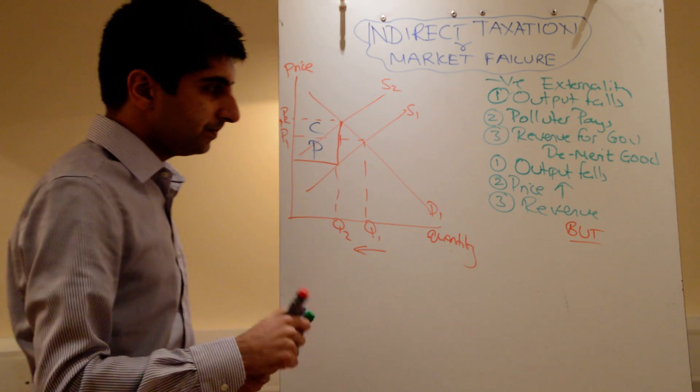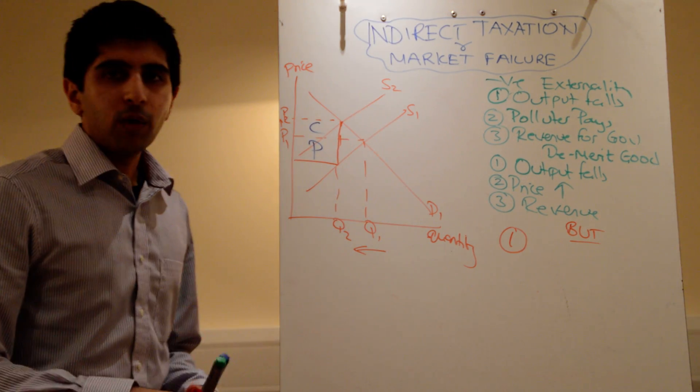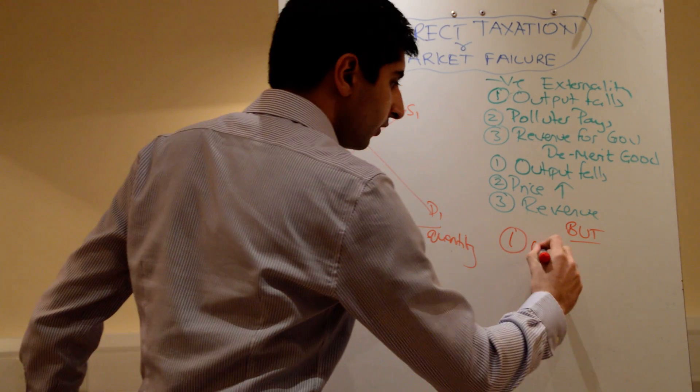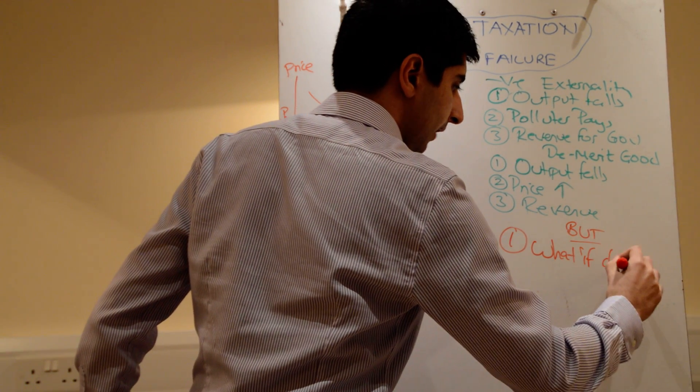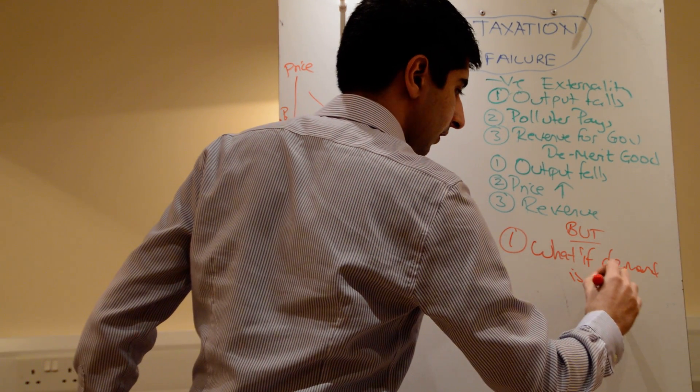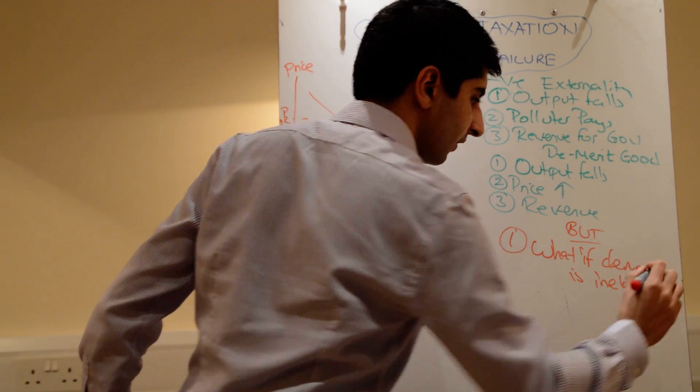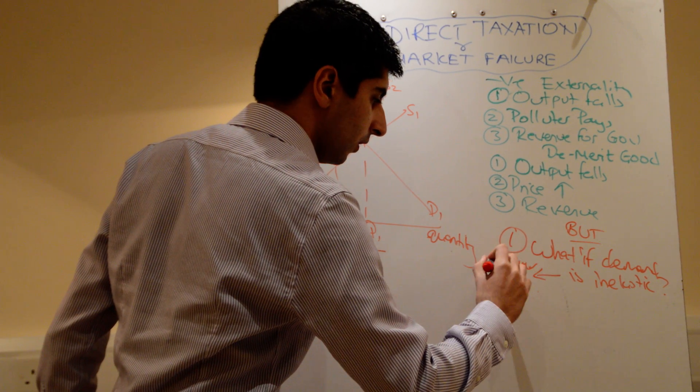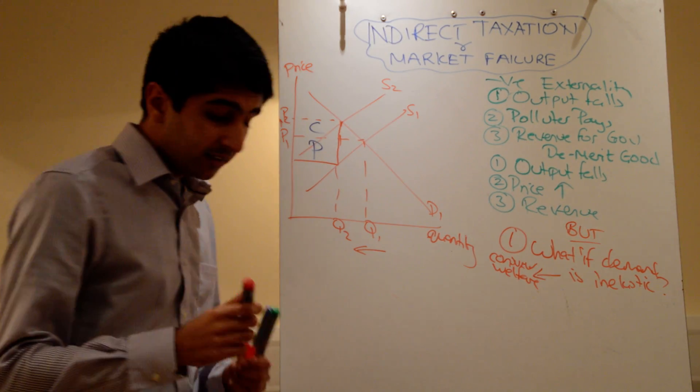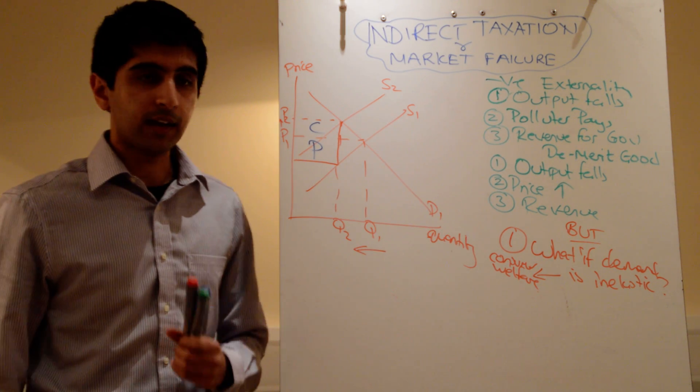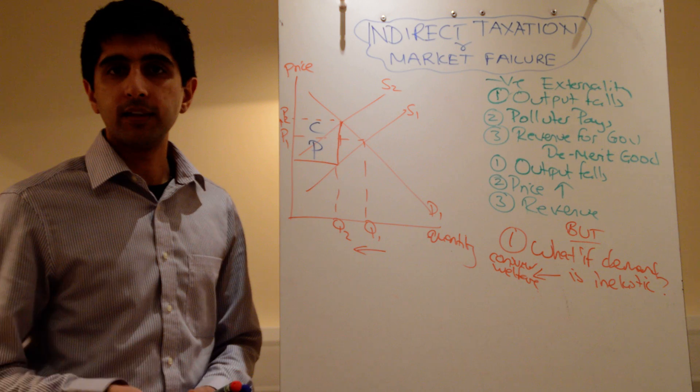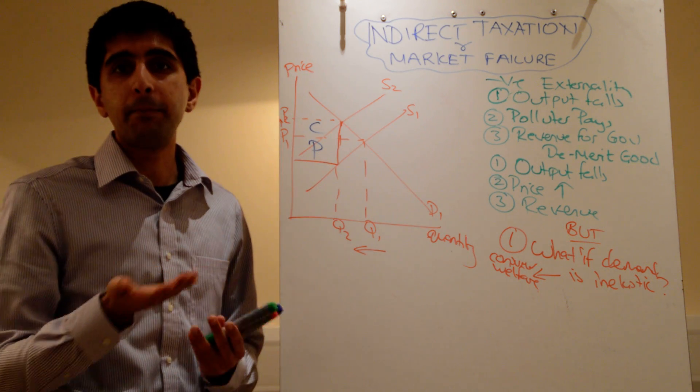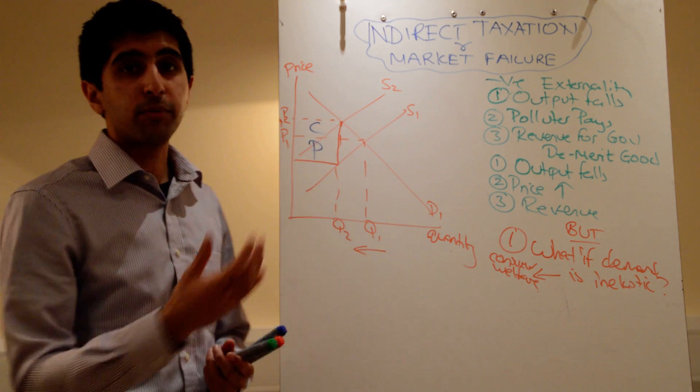But what are the problems here? First of all, the effect depends on the elasticity of demand. If demand is very inelastic, quantity won't fall very much. So if demand is inelastic, this tax will not be as effective. At the same time, you might get an adverse effect on consumer welfare. Most demerit goods and most goods that generate negative externalities have got inelastic demand, like cigarettes and alcohol drinks. So you put a tax on these where demand is inelastic, the consumer is just going to bear a much higher price. The consumer is going to bear the brunt of the tax. There's going to be an adverse effect on consumer welfare.